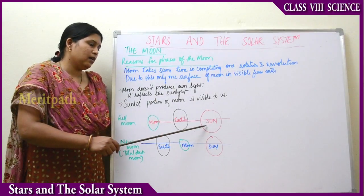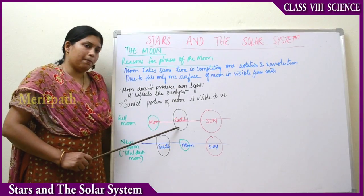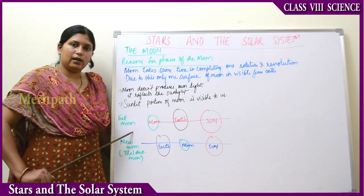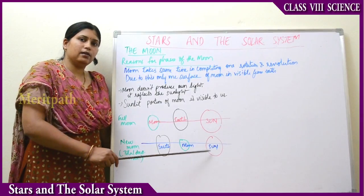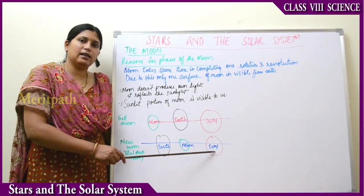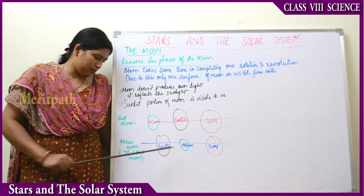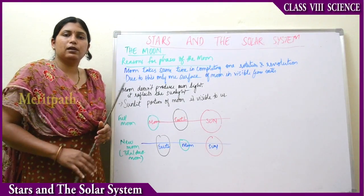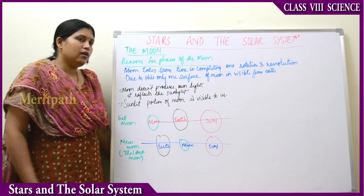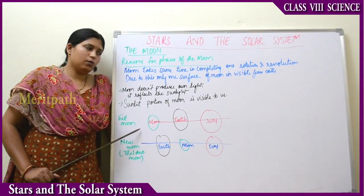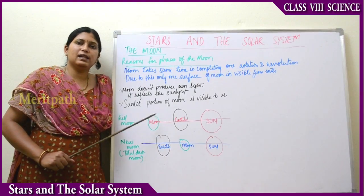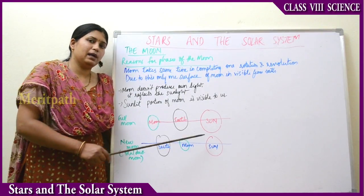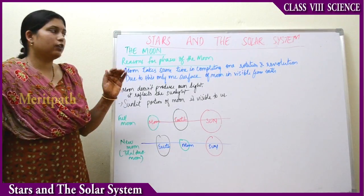On a full moon day, the sun, the Earth, and the moon are in a straight line with the Earth in the middle — the moon and sun are on opposite sides of the Earth. On a new moon day, the moon and the sun are on the same side, with the Earth in between. On the new moon day, no moon is visible and there is total darkness.